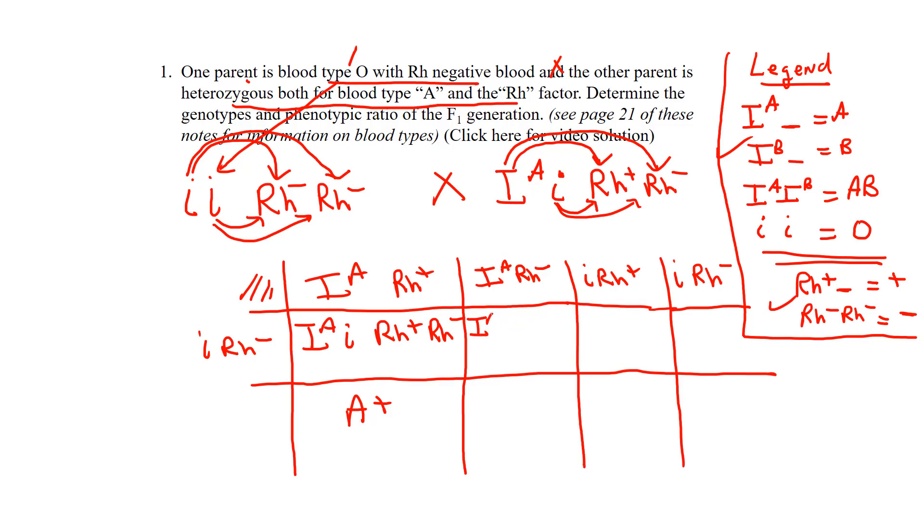Now let's do the other one. IA, little i, RH negative, RH negative. That person's going to be A blood, but they're going to be A negative. Little i, little i, RH positive, RH negative. That person, little i's, go look at your legend, that's why we've done it, O, and of course the positive is going to dominate and mask the expression of the negative, O positive.